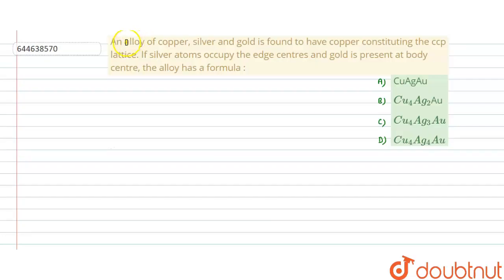Hello student, the given problem is: an alloy of copper, silver and gold is found to have copper constituting the CCP lattice. If silver atoms occupy the edge centers and gold is present at body center, the alloy has a formula - which of the following option is correct?